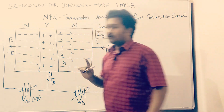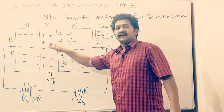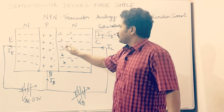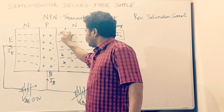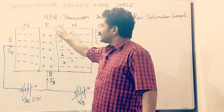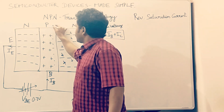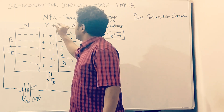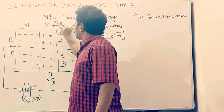So what happens? Recombination takes place with the minority charge carriers. If you can see, holes in the collector region recombine with electrons in the base region, so the direction of current is in this direction, which is denoted by ICBO.